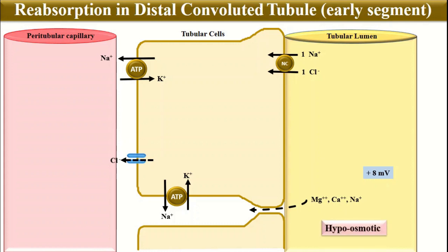It is important to remember that this segment is impermeable to water and urea. Because water remains inside the tubular lumen, this segment is also called the diluting segment, and the fluid in this part is hypoosmotic relative to plasma.